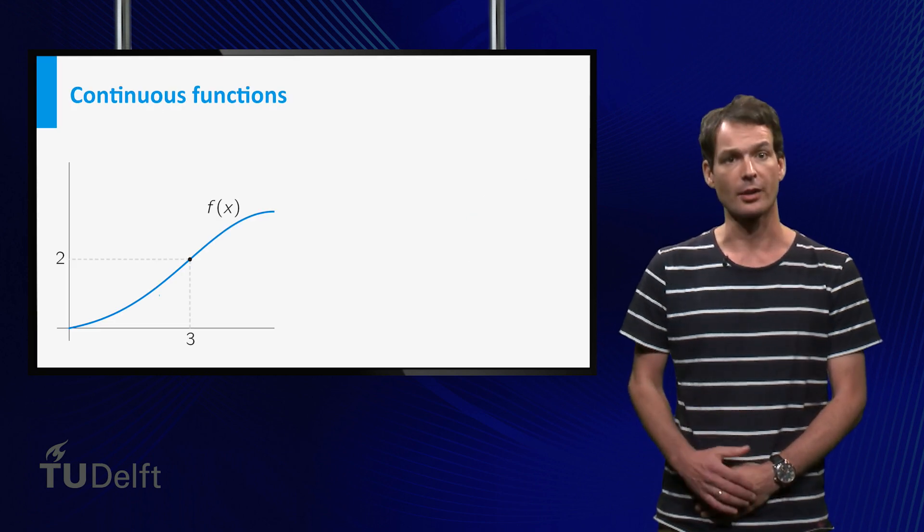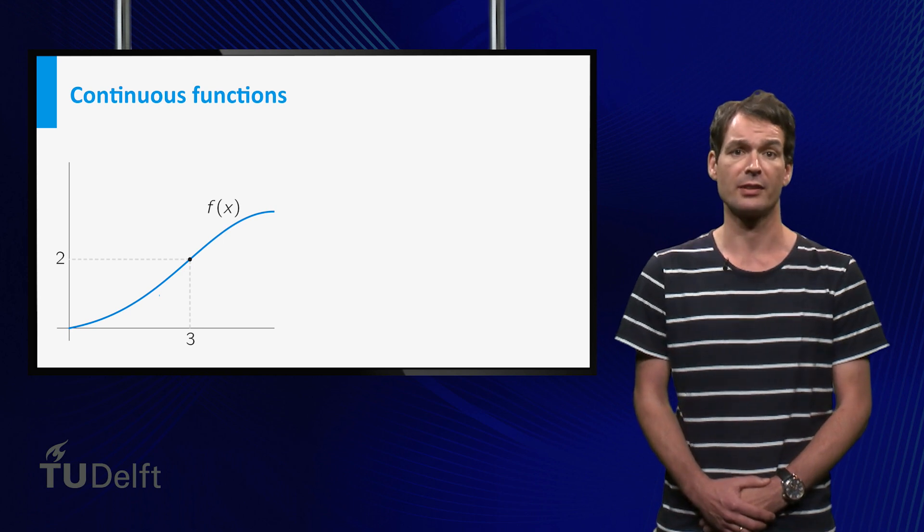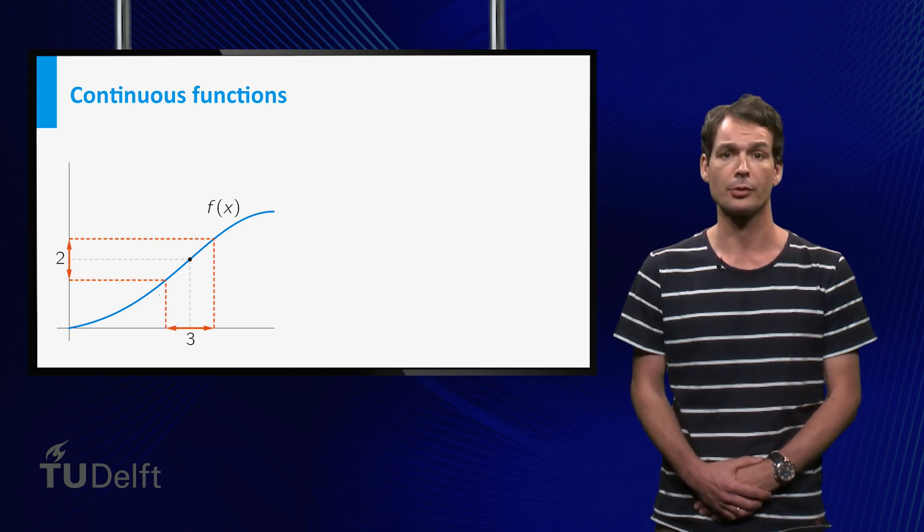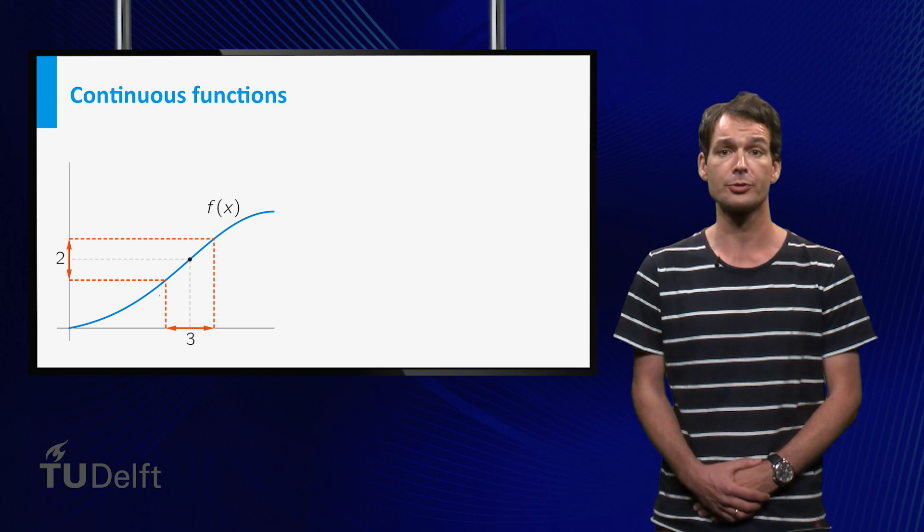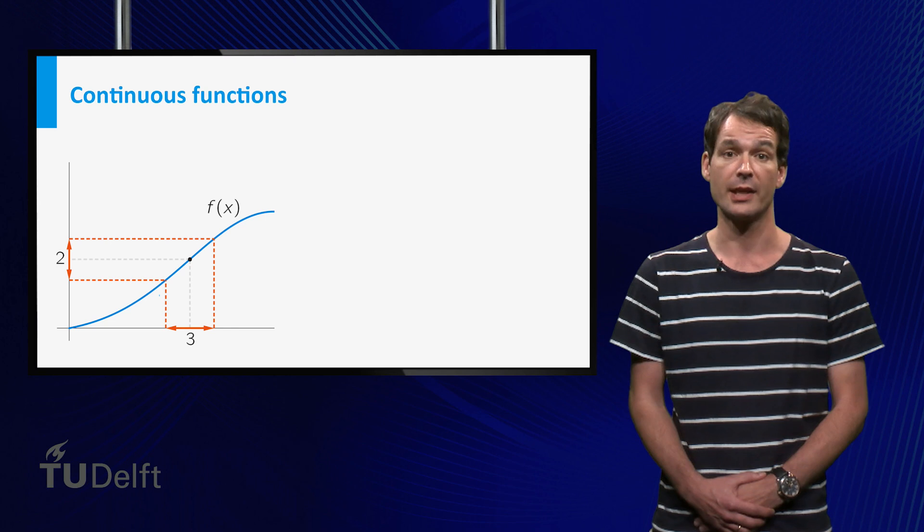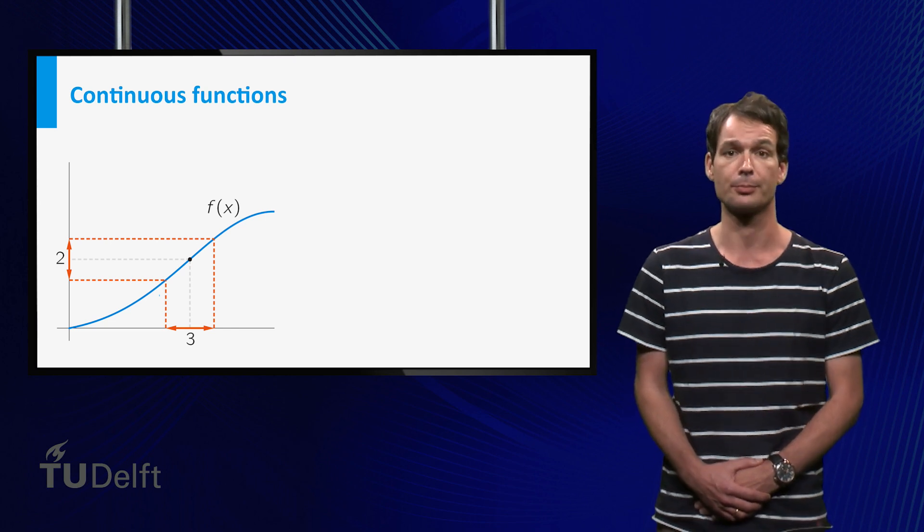Well, here is the graph of a function f describing the distance travelled by the ball. You can see that f equals 2. If we now take a point x on the horizontal axis which is close to 3, you see that the value of f at x stays close to 2. We say that the function f is continuous at the point 3.